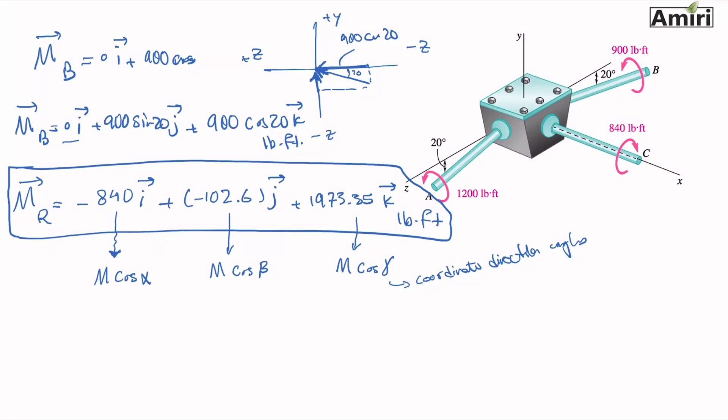All I have to do is find the magnitude, then I can find cosine alpha, cosine beta, cosine gamma, and that defines the direction of this vector. Magnitude of M is just the square root of each of the components squared: minus 840 squared, minus 102.6 squared, 1973.35 squared. And if you do the math, you should get 2147.3 pound-foot.